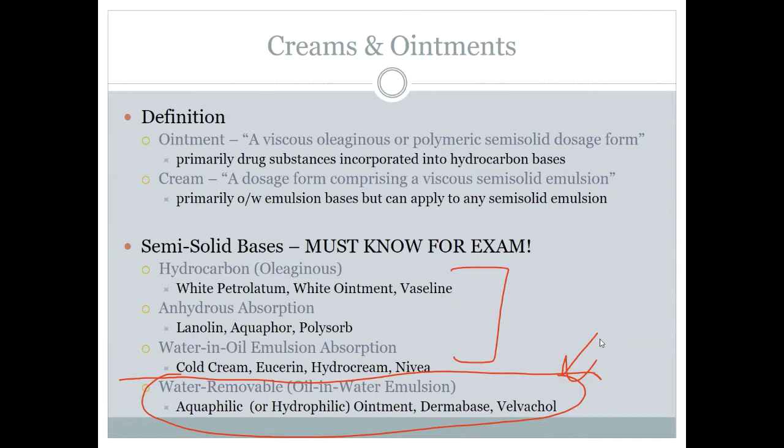Going back to emulsion types: if we put water in the oil, we get water-in-oil bases, which are a very common kind of ointment base. If you've heard of Eucerin, Nivea, or cold cream, they're kind of a mixture between a yellow ointment and a white cream — off-white, stiffer, slightly oily, and emollient to the skin. They are not easily water washable, so we still categorize them as oil bases.